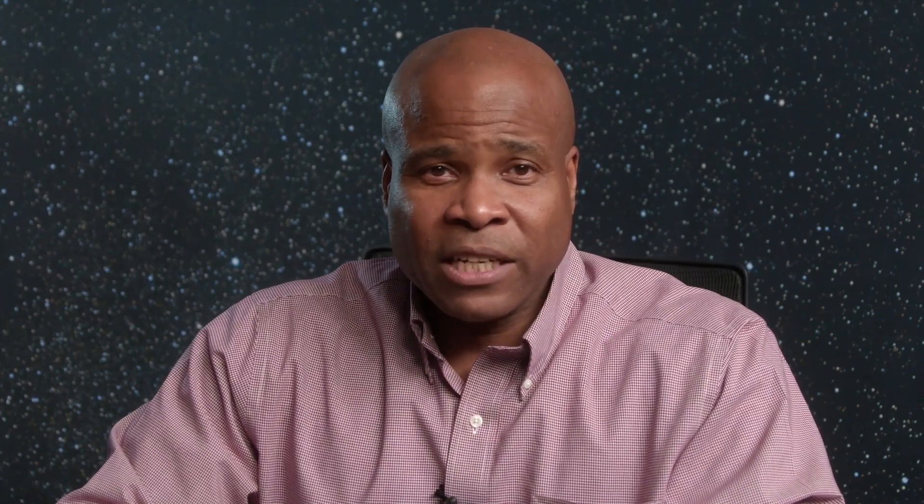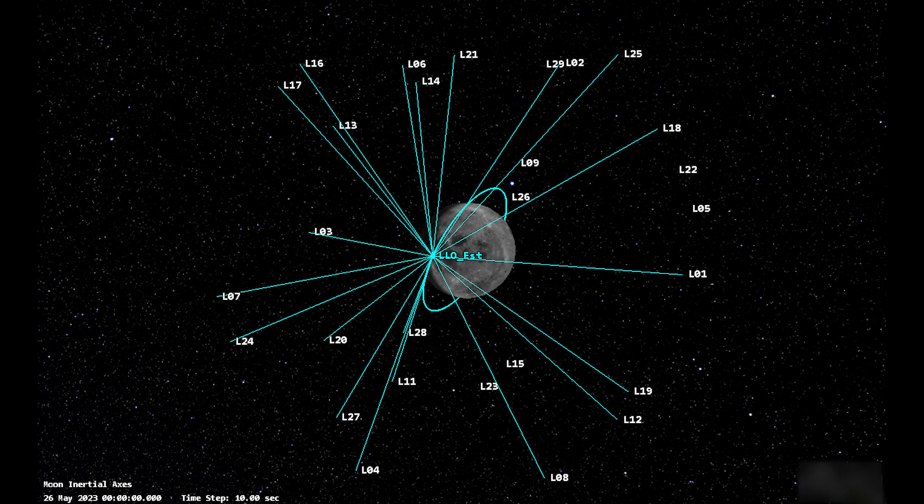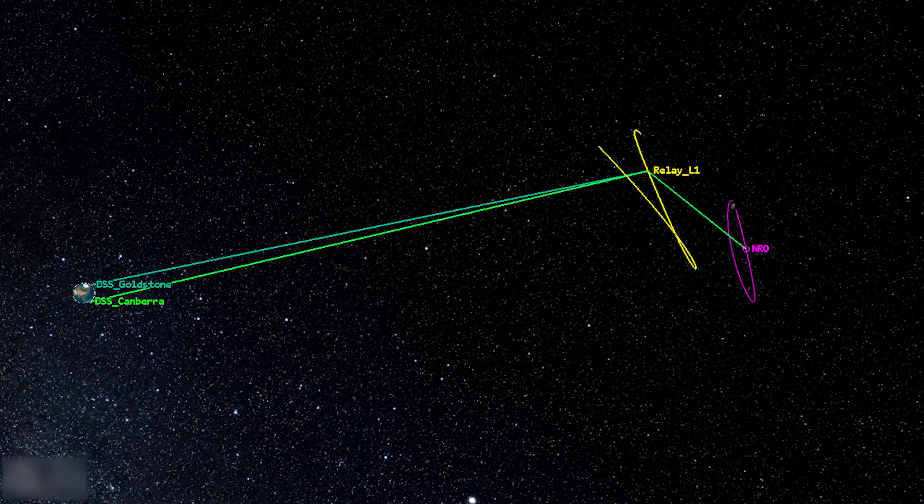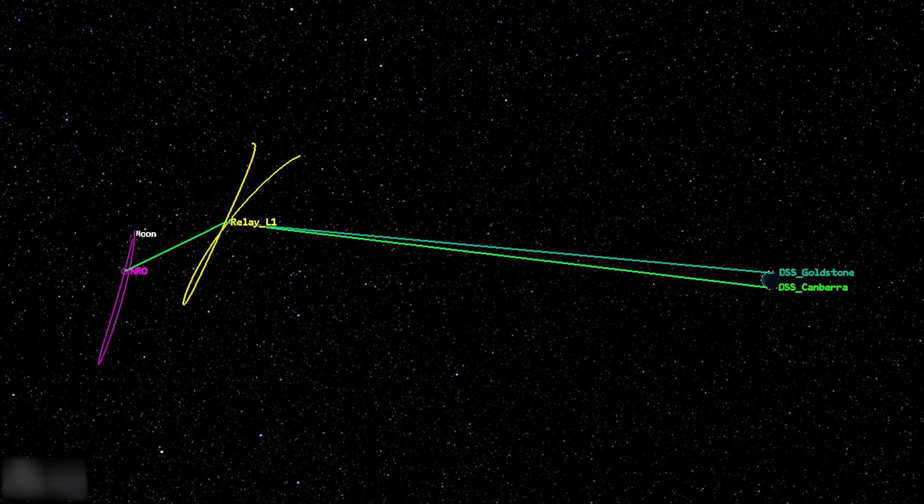We've also extended the applicability of relayed measurement types such as bistatic range and Doppler and four-legged range and five-legged Doppler to situations where the elements of the tracking strand span between the Earth and the Moon. We have also added to the one-way measurement models available as a step towards facilitating the analysis of time transfer strategies between the Earth and lunar domains.